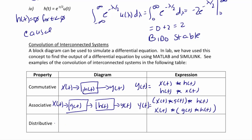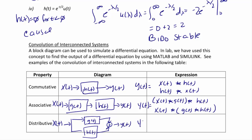For the distributive property block diagram, input x(t) is split and goes into two different systems, g(t) on top and h(t) on the bottom, and the two outputs are summed together to get y(t). Based on the distributive property, y(t) equals x(t) convolved with the quantity g(t) plus h(t), which also equals x(t) convolved with g(t) plus x(t) convolved with h(t).